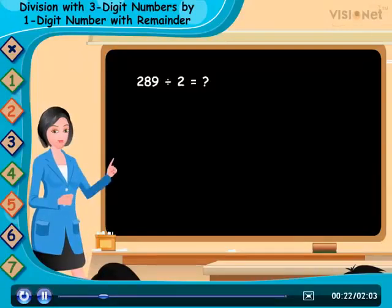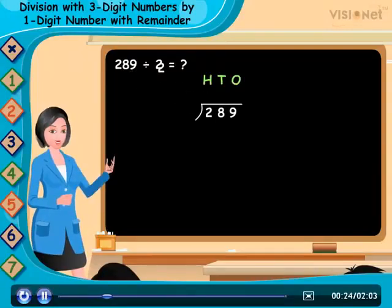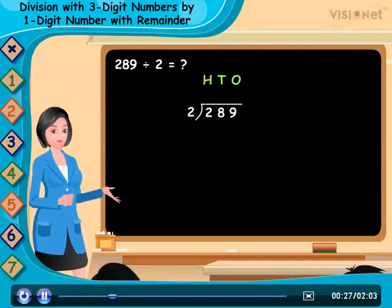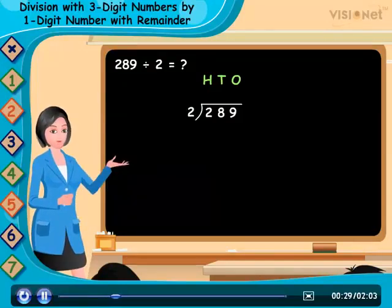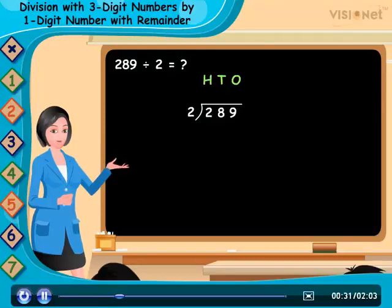First we place dividend by divisor, like this. Now we will start our division from the hundreds place. Look, we first divide 2 by 2.